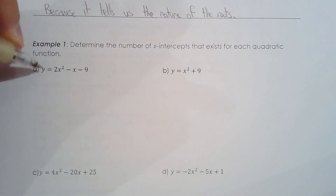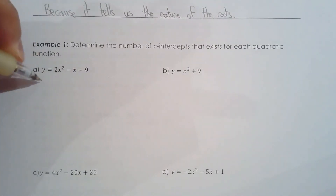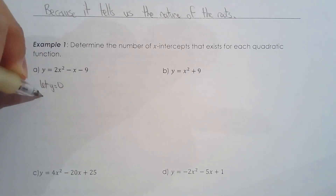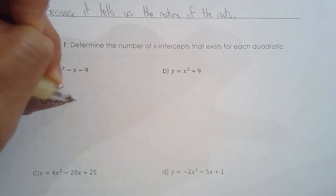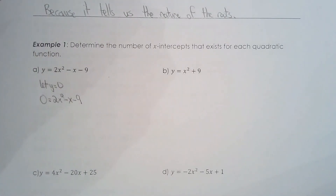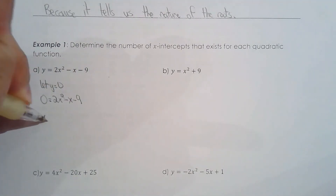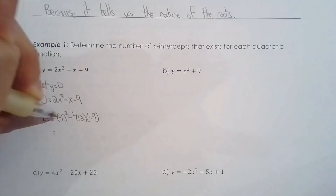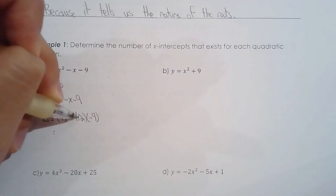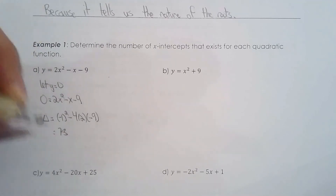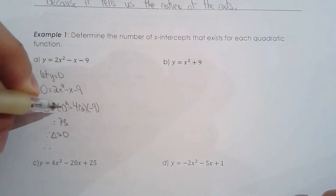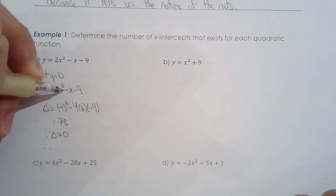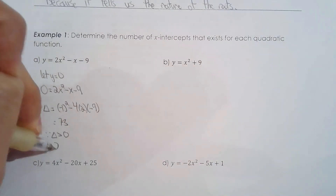Let's determine the number of x-intercepts for each quadratic relation. For y equals 2x squared minus x minus 9, let y equal zero. I don't care what the x-intercepts are — I want to know how many there are. So I'll solve the discriminant: b squared minus 4ac gives 1 plus 72 = 73. Since the discriminant is greater than zero, there are two unique real roots — two x-intercepts.